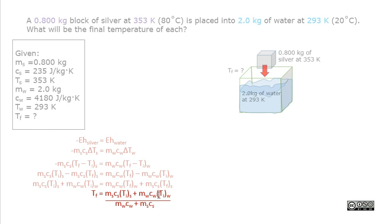divided by the mass of water times the specific heat capacity of water, plus the mass of silver times specific heat capacity of silver.